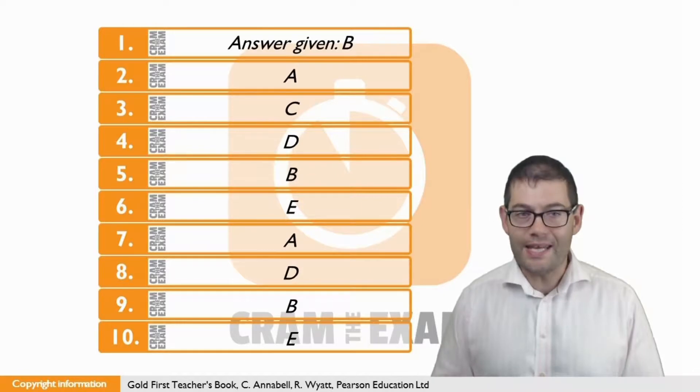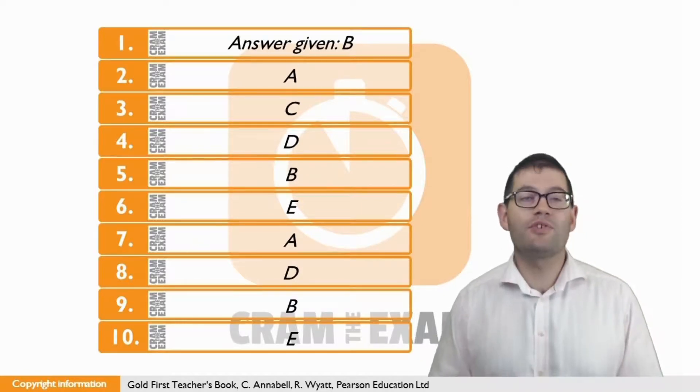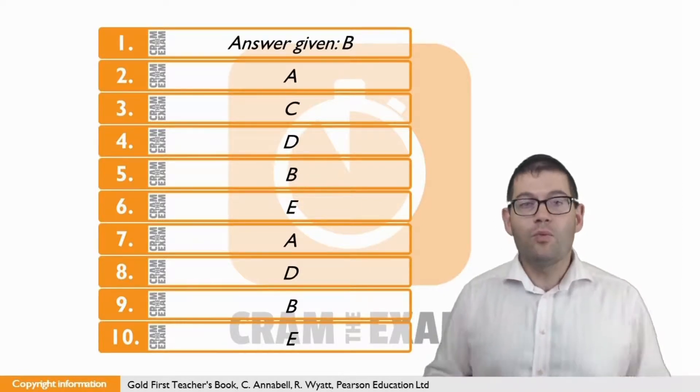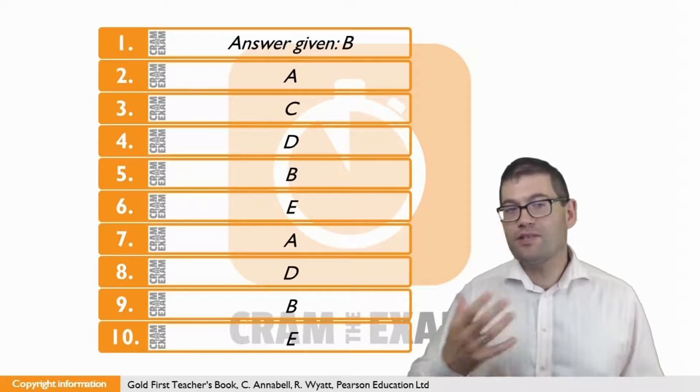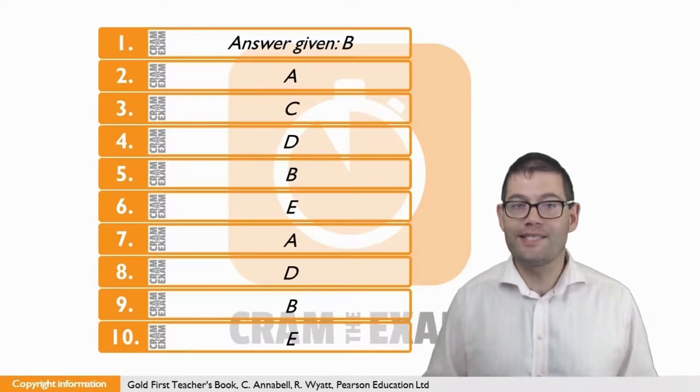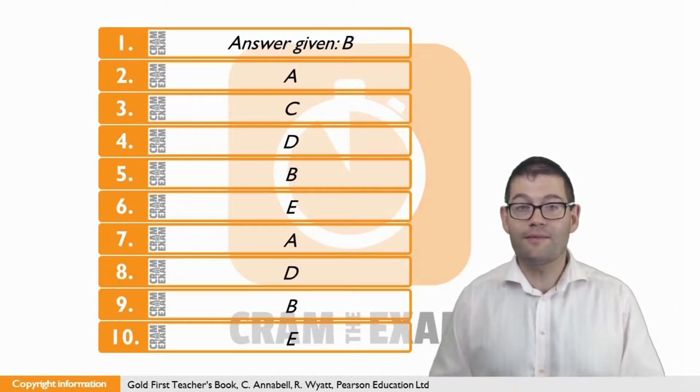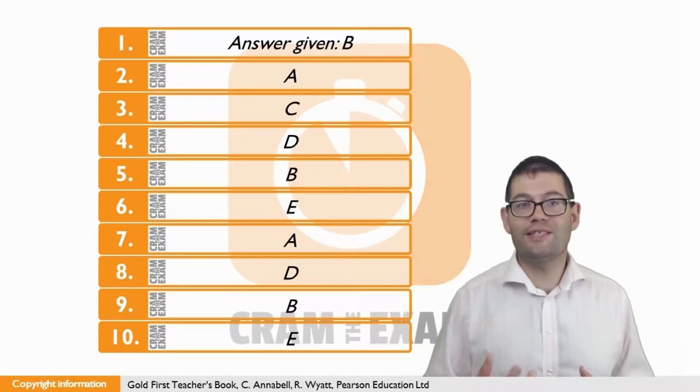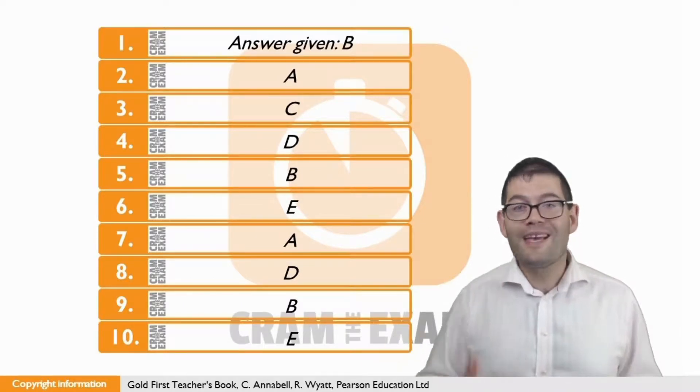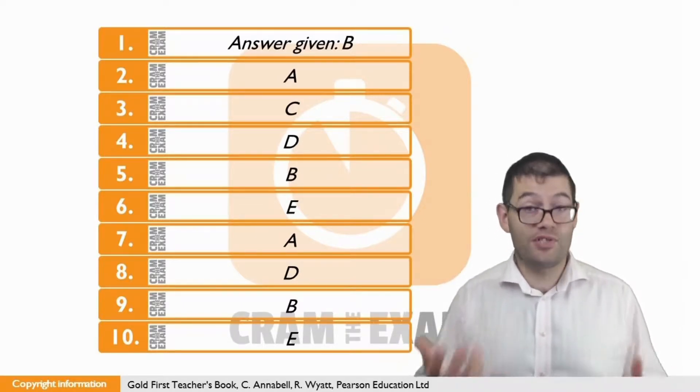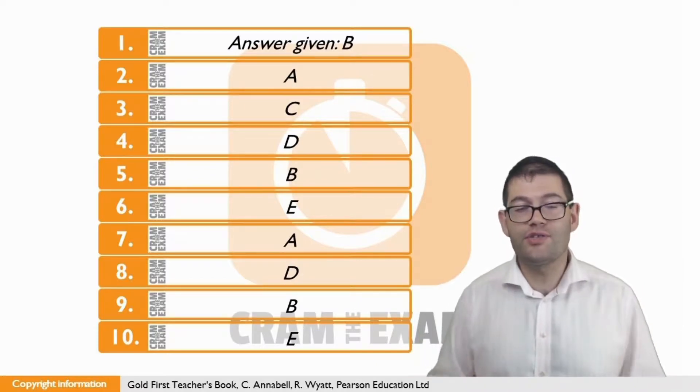For question eight, the answer is D. Annie sacrificed career opportunities to live abroad. We've got to look for an answer which carries across the idea of sacrifice, that is, giving something up, which is mentioned in question eight. We can find this where it says she was building a career which suggests that she was doing well, and then she had to give this up or sacrifice it to go and live in Argentina.